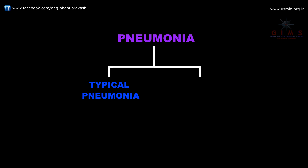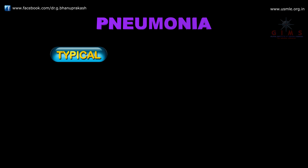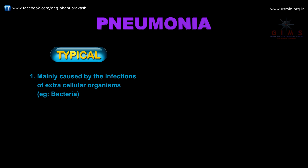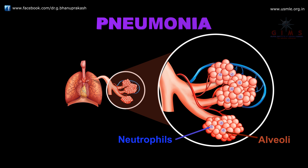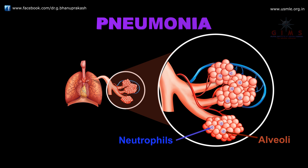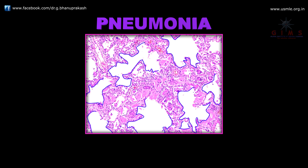Pneumonia is of two types: typical pneumonia and atypical pneumonia. In typical pneumonia, it is mainly caused by infections of extracellular organisms, mainly bacteria. It is characterized by neutrophilic infiltration and the presence of intra-alveolar exudates, which leads to lung consolidation.